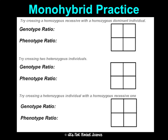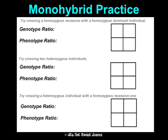Here are practice problems to complete in your notes. First, cross a homozygous recessive with a homozygous dominant, fill in the Punnett square, and determine the genotypic ratio — what percentage are homozygous dominant, heterozygous, and homozygous recessive. Then for the phenotypic ratio, using purple flowers as dominant over white, determine what percentage show purple and what percentage show white.